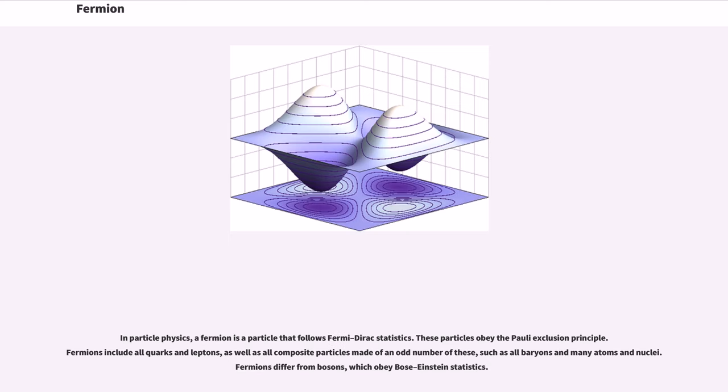In particle physics, a fermion is a particle that follows Fermi-Dirac statistics. These particles obey the Pauli exclusion principle. Fermions include all quarks and leptons, as well as all composite particles made of an odd number of these, such as all baryons and many atoms and nuclei. Fermions differ from bosons, which obey Bose-Einstein statistics.